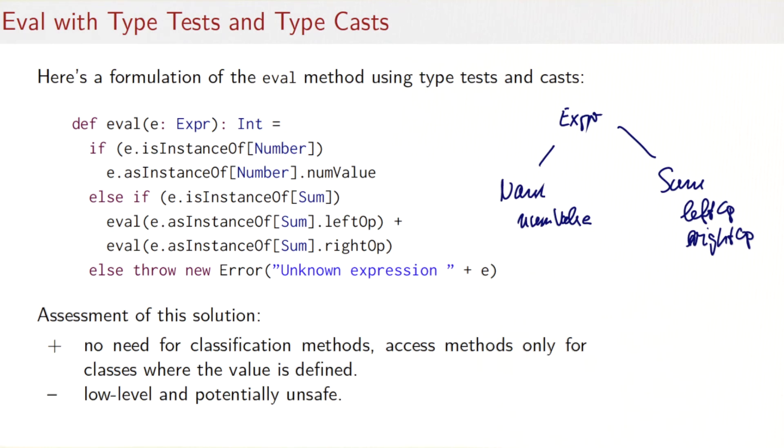On the other hand, the use of type tests and type casts is very low level. It's unsafe, because when you do a type cast, you do not necessarily know at runtime whether the type cast will succeed. It might also throw a class cast exception. In this example here, we have actually guarded every type cast by a type test, so we can assure statically that none of these casts will fail. But in general, that's not assured. So that's why we recommend that people stay away from type casts.